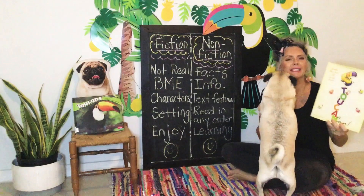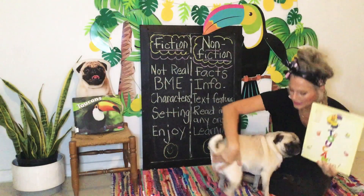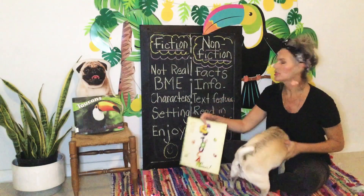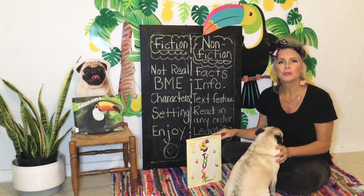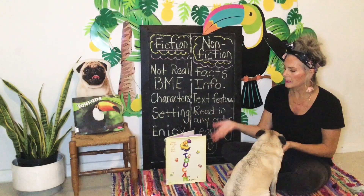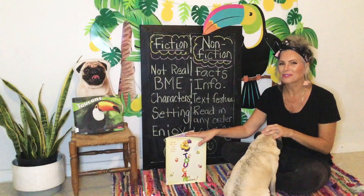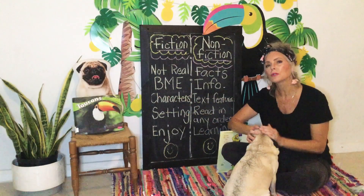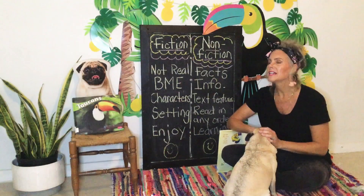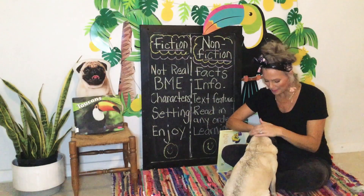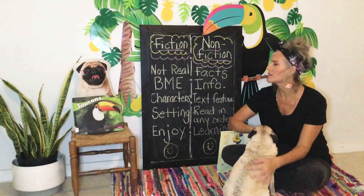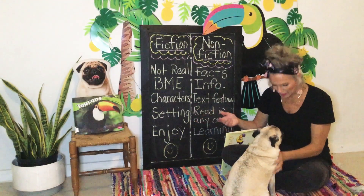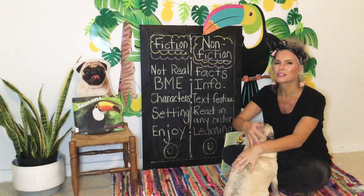It's called Toucan Can. Fiction books are not real — the characters are not real. The characters are going to be doing things that a real character wouldn't do, and you're going to see that in our story today. Fiction books have a beginning, a middle, and an end. There's an order to a fiction story book — it starts in the beginning, then something happens in the middle, and then it has an ending, so you have to read it in order to understand what's going on. Fiction books have characters and a setting — that's where the story is happening. And we read fiction for enjoyment.